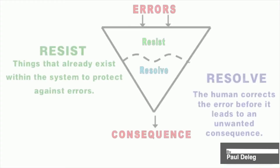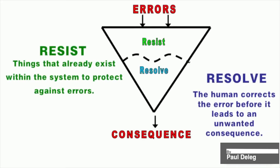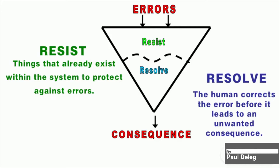This is the second part of the model. When errors occur, there is a resist and resolve aspect. The resist refers to things that already exist within the system to protect against errors, and the resolve is when the human corrects the error before it leads to an unwanted consequence.